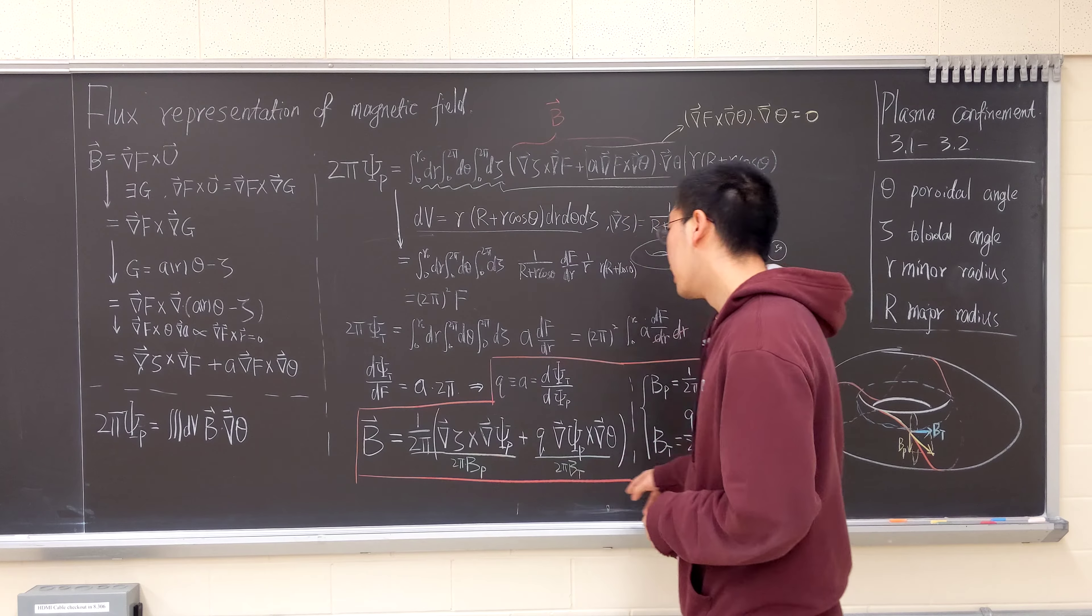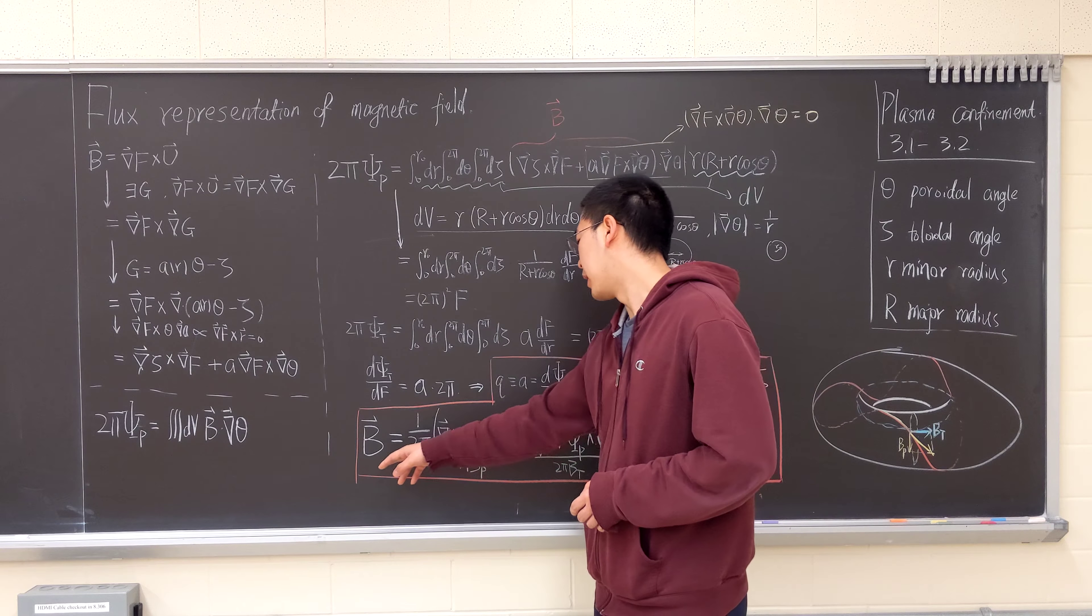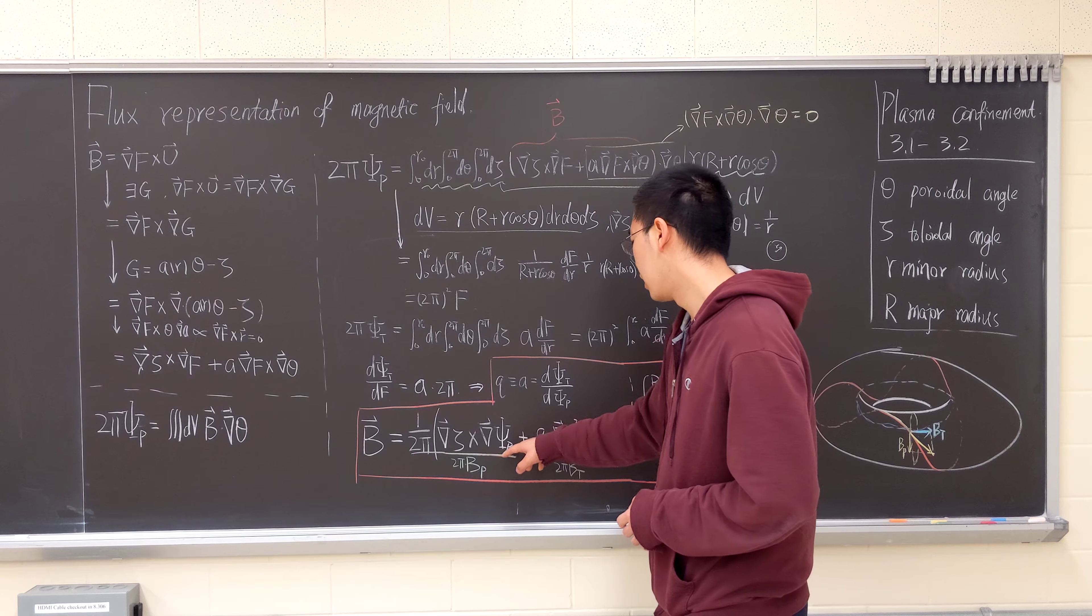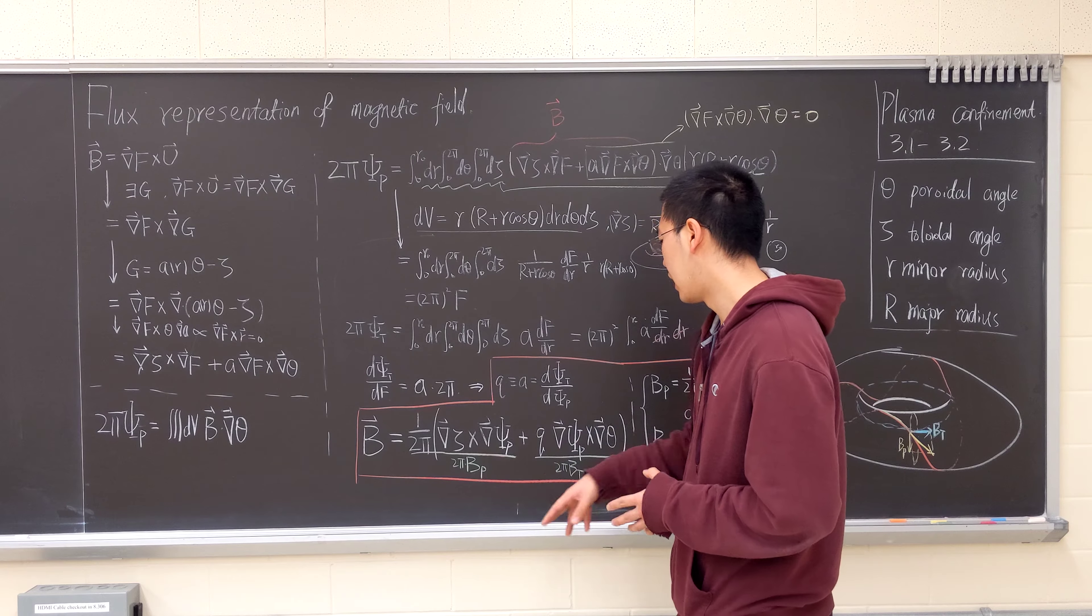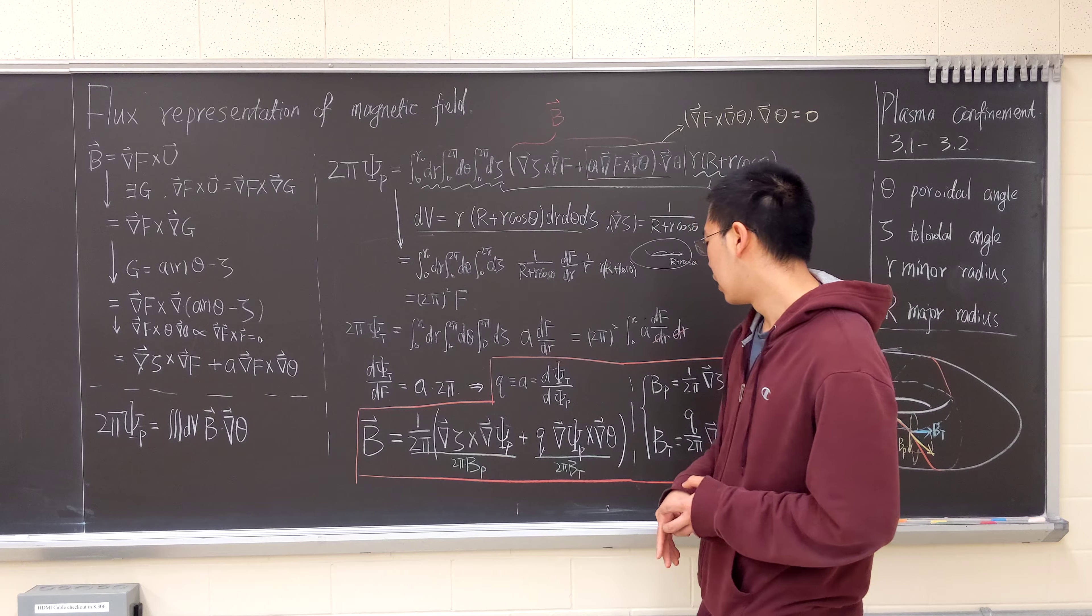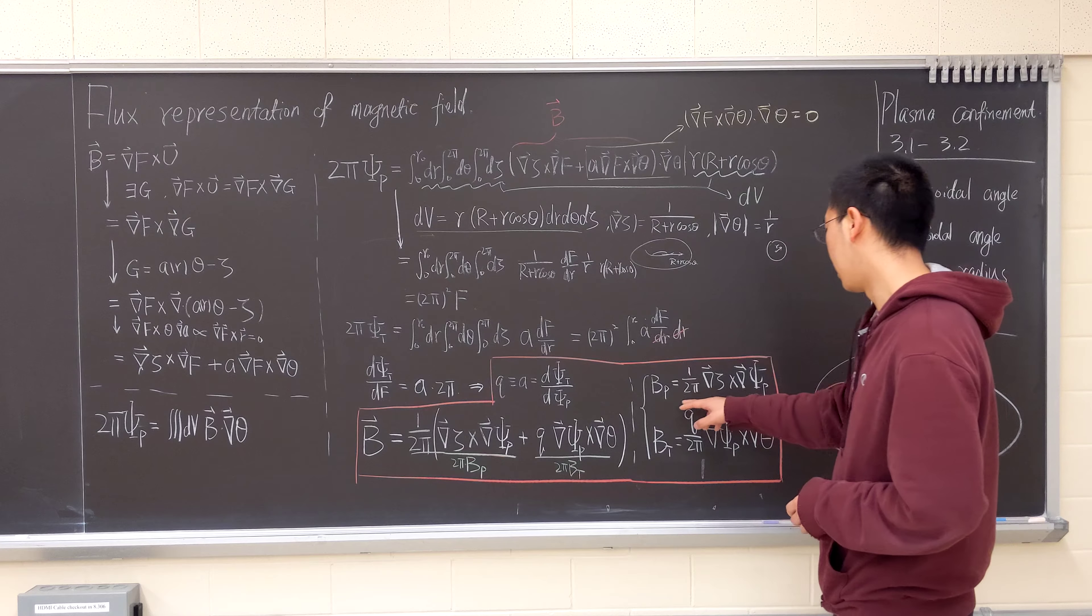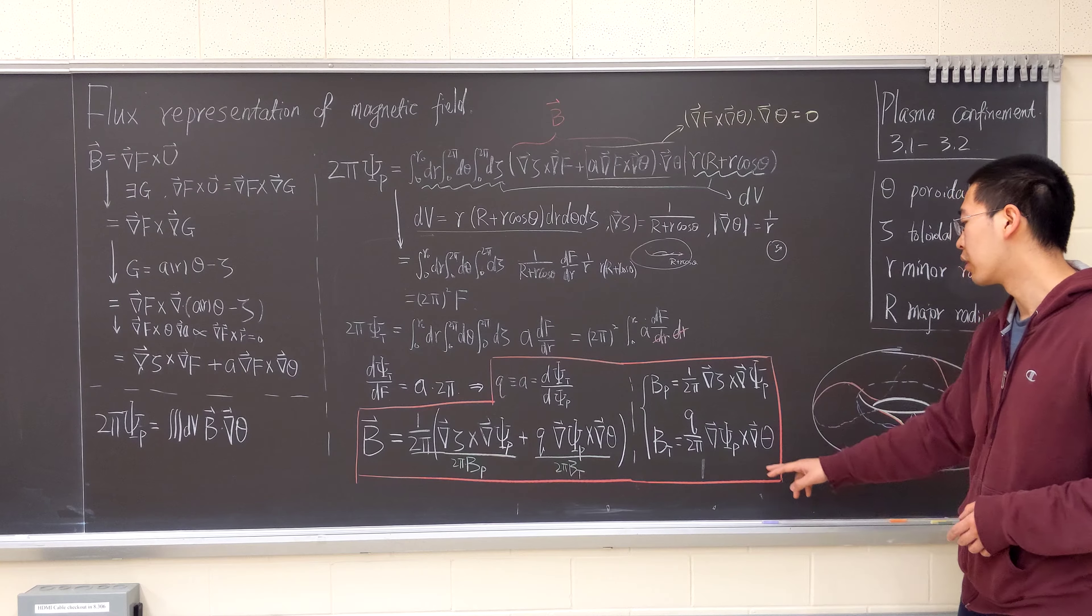So in conclusion, the magnetic field can be expressed in terms of psi_p, the poloidal magnetic flux, and the safety factor. This whole thing represents a poloidal magnetic field.